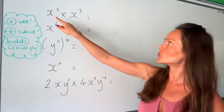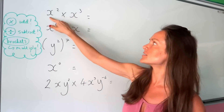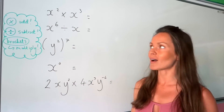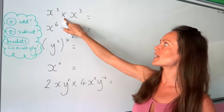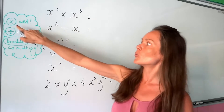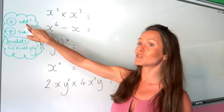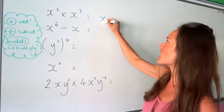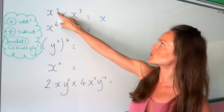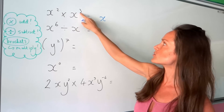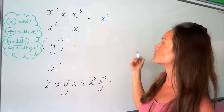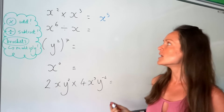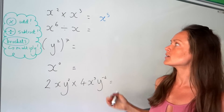Let's look at the first one. I've got two letters that are the same, so the power rules apply. Because we're multiplying them together, we need to remember to add the powers. So in the first one I'm doing two plus three which is five.